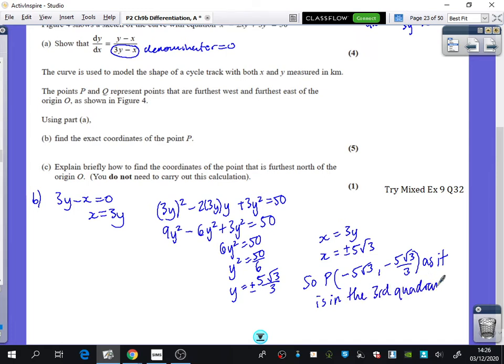Because remember, the quadrants, as you go around the graph, it goes first, second, third, fourth. So if you wanted to use the right language, you'd say it's in the third quadrant, where both of them are negative.